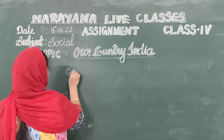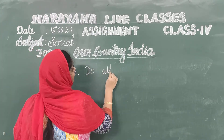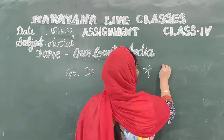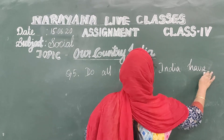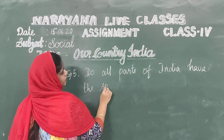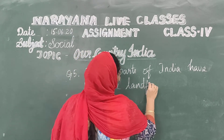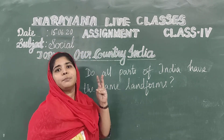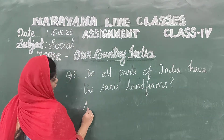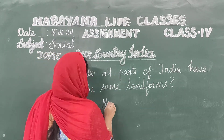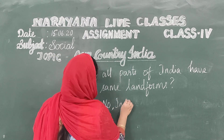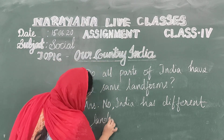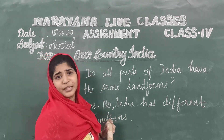We will move to the final question. Question number 5, the last question: Do all parts of India have the same landforms? Think of our country's physical map — we are blessed to have all types of landforms. We have plains, plateaus, mountains, and deserts. So the answer is No — India has different landforms. You have completed today's assignment. Thank you, children.